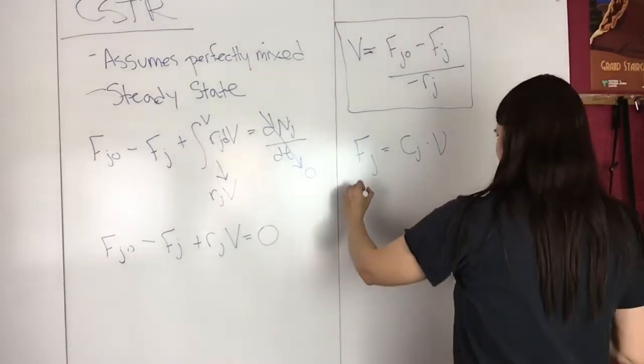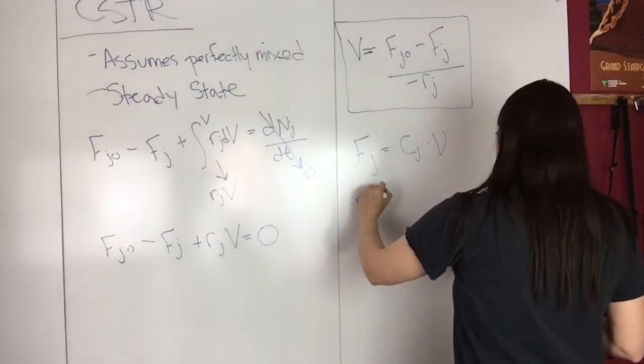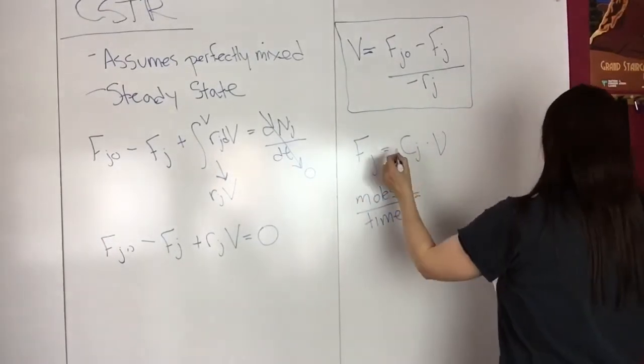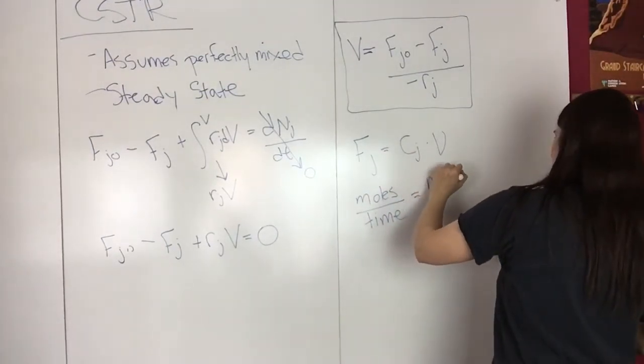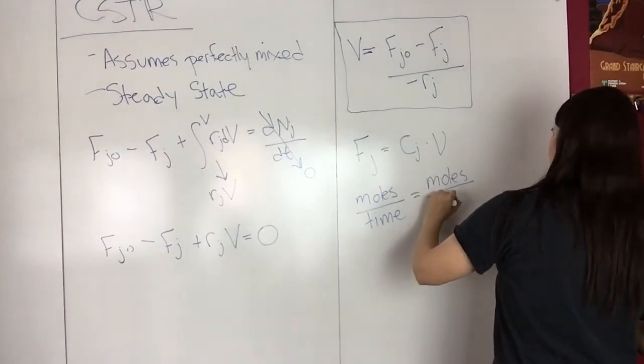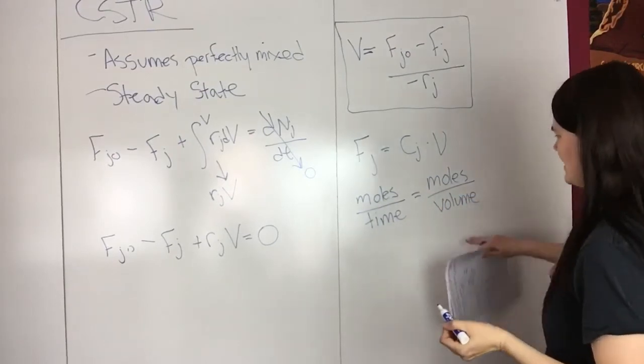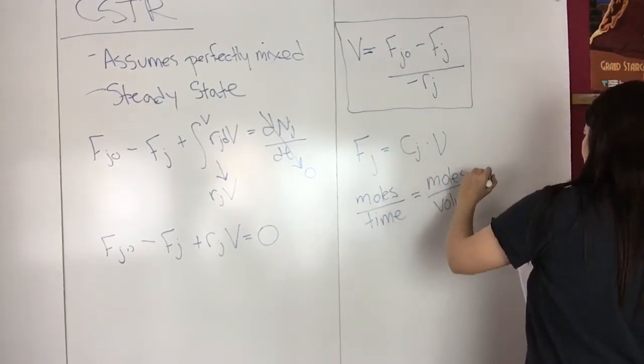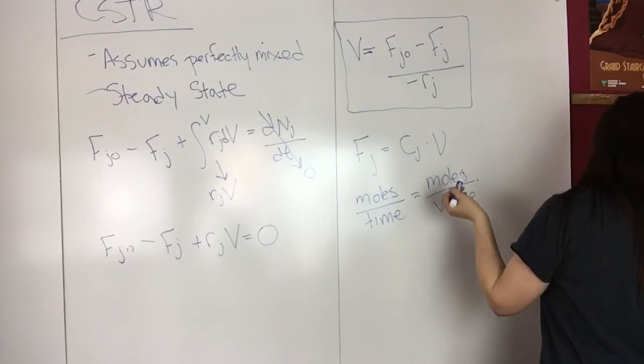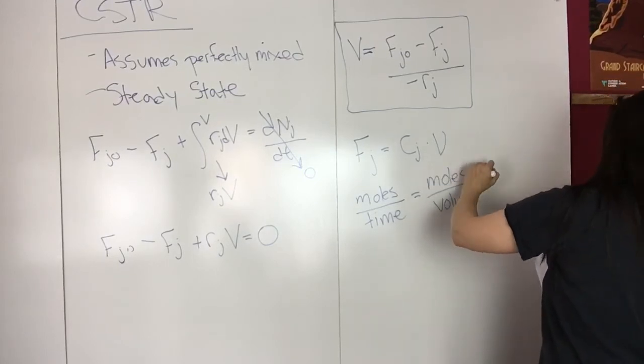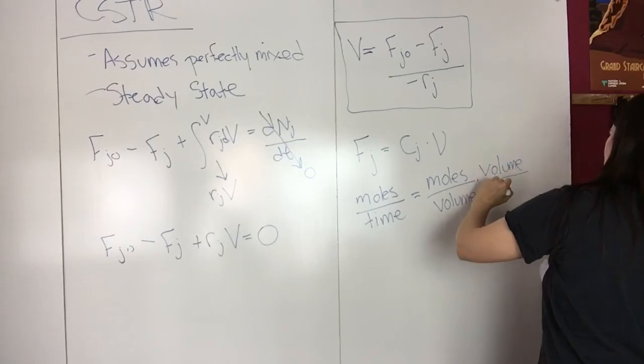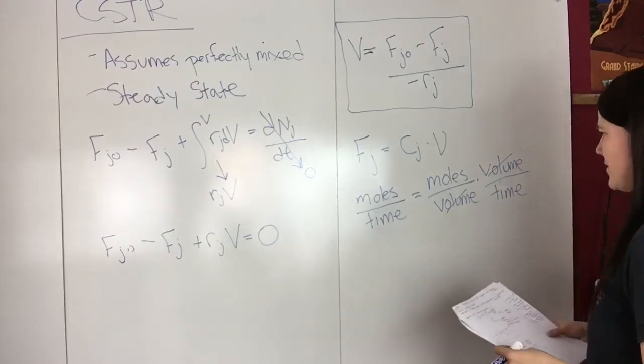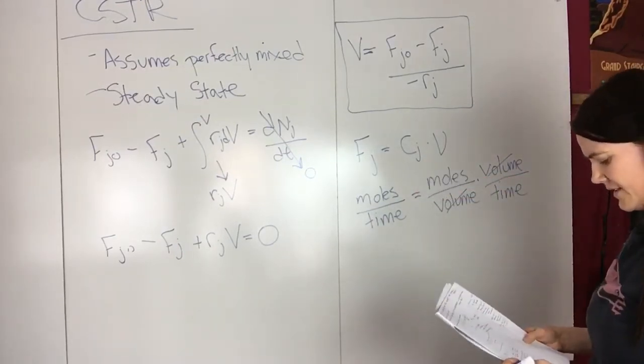If you look at these units, FJ is moles per time. CJ is moles per volume because this is a concentration. The volumetric flow rate is volume over time, so volume cancels out and you end up with moles per time. You can see that this works out.